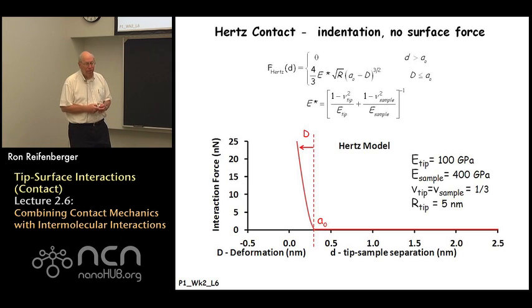The next logical example is the Hertz contact. In this particular example, the interaction force between the tip and the substrate is zero because there's no surface forces at all in the Hertz model. As the tip approaches the substrate, the interaction force is zero until we reach parameter a0. At that point, the Hertz contact model sets in and the prediction is written in the equation at the top of the slide. We have to define this effective elastic modulus E star which requires us to know the modulus of the substrate and sample and the Poisson's ratio for the tip and sample.